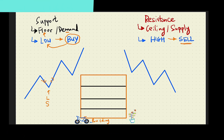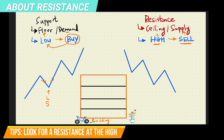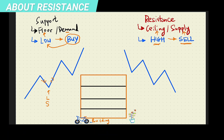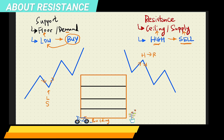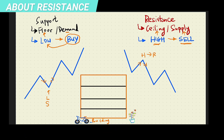Let's take a look at resistance. It is likely to be a place where there's selling activity. Why? Because there's supply. The supply comes in to sell because it is near the high. When it's near the high, it resembles a ceiling. As price moves up and hits a high point, this is likely to be a resistance because there's selling pressure to cause it to come down. People are selling and we can conclude that this is a resistance.